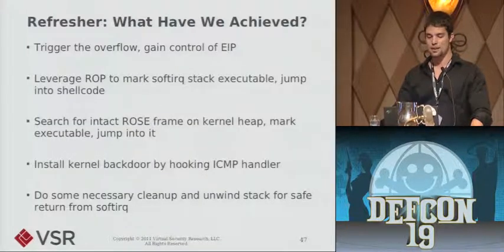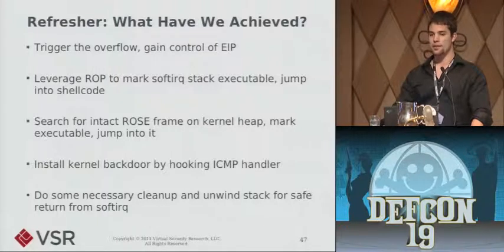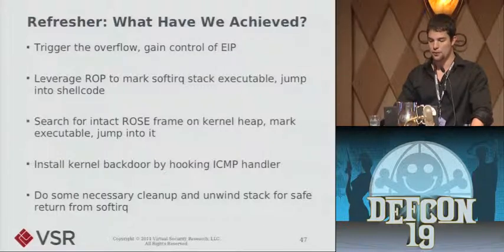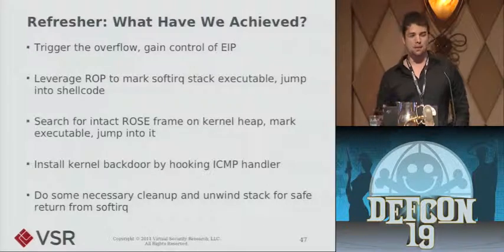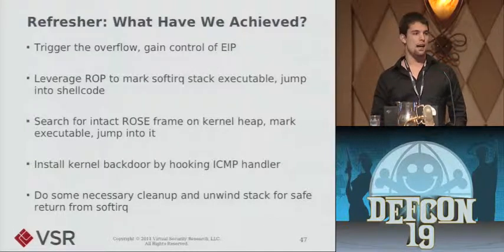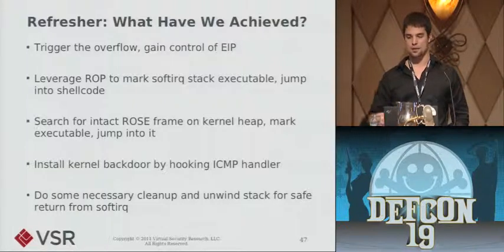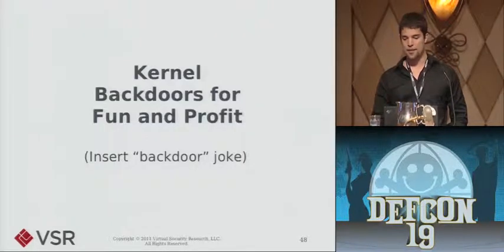Let's go over what we've done so far — that's the end of the exploitation phase. If you send your exploit over, it installs its hook and the kernel keeps running; it would never notice anything happening. To summarize: we trigger our overflow, gain control of the instruction pointer, then leverage return-oriented programming to mark the soft IRQ stack executable and jump into a shellcode stub. Because of the space limitation, we find the entire ROSE frame on the kernel heap, mark it executable, and jump into it. Next, we install our kernel backdoor by hooking the ICMP handler, and then do cleanup to keep the kernel running.